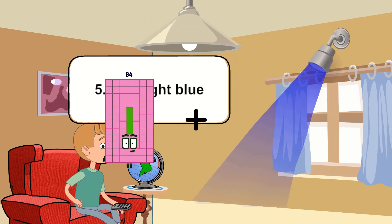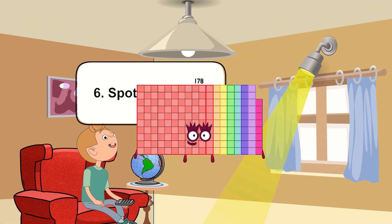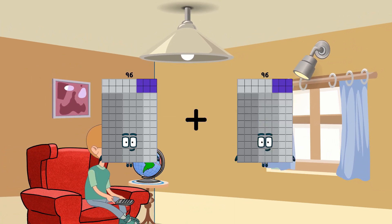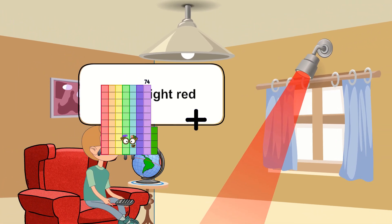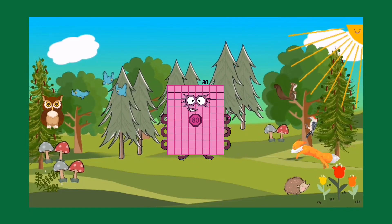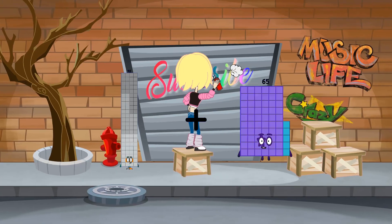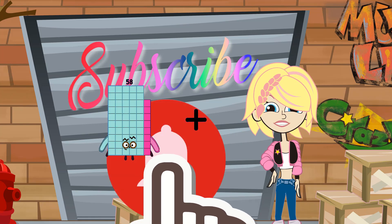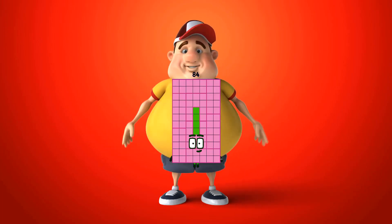84 plus 94 equals 178. 96 plus 96 equals 192. 65 plus 15 equals 80. 92 plus 82 equals 174. 60 plus 24 equals 84.